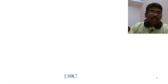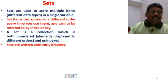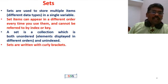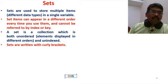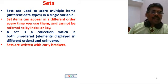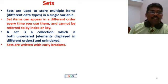First, sets are used to store multiple items of different data types in a single variable. Multiple items of different data types stored together is called a set. Set items can appear in a different order every time you use them, and cannot be referred to by index or key.